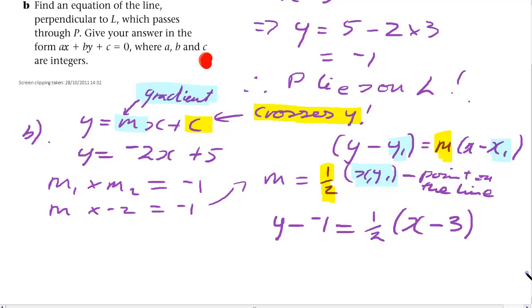Now, bearing in mind, we want to have whole number values everywhere. It wouldn't be a good idea to times this bracket out by half. So let's times the whole equation by 2, because that will get rid of the half. Times this by 2, you get 2y. Minus and minus gives you a plus. So we've effectively got plus 1 here. Times by 2 gives you plus 2.